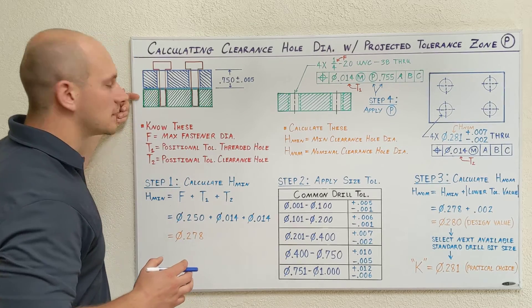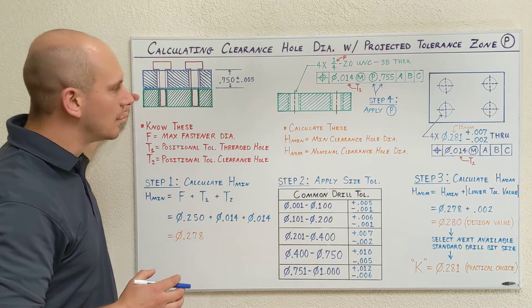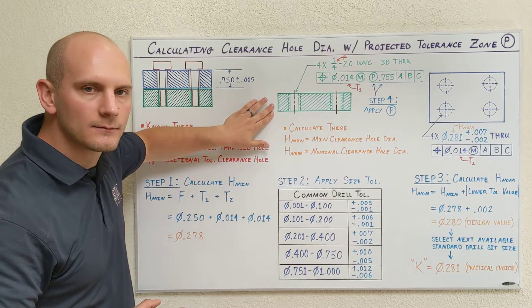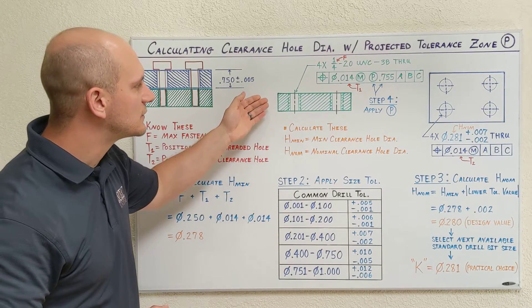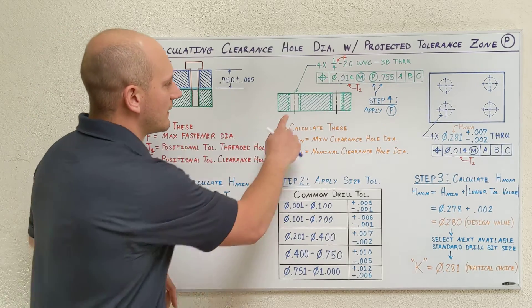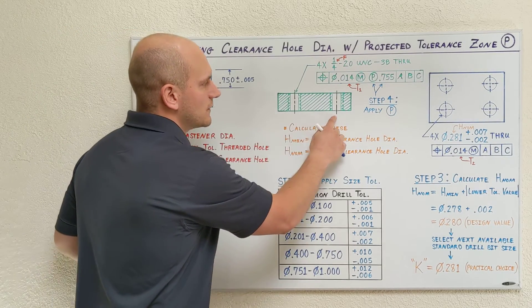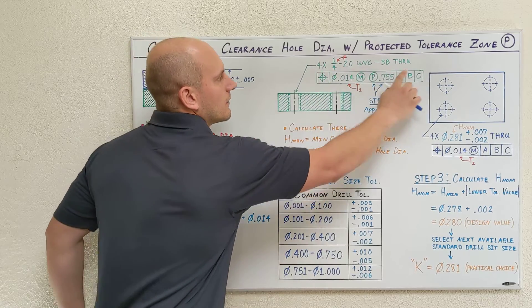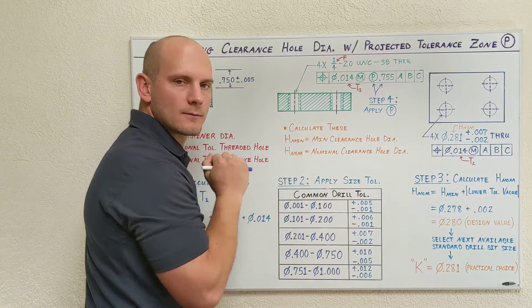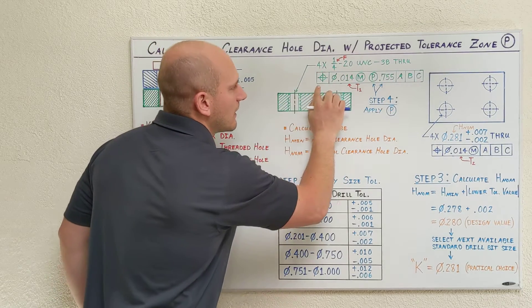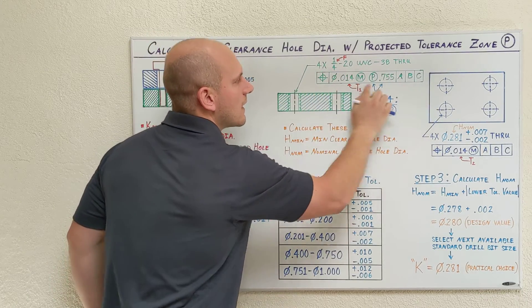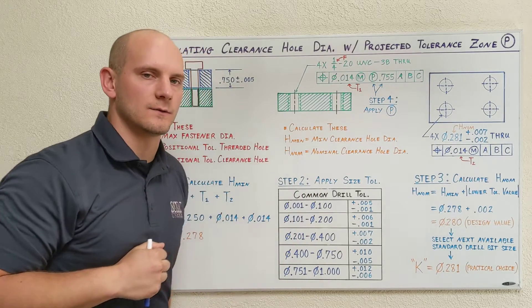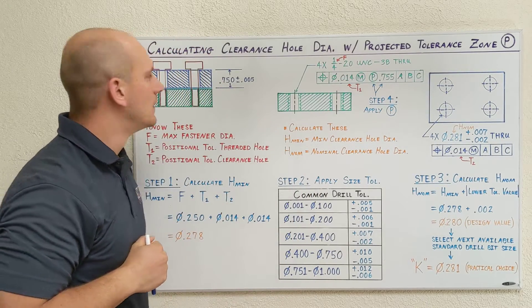For this lower plate, I'm showing the detail for it right here. It's a section view, so my threaded feature is shown here. I've got my threaded hole call-out, and then I've got my positional tolerance that I'm using to control the locations of these threaded holes.